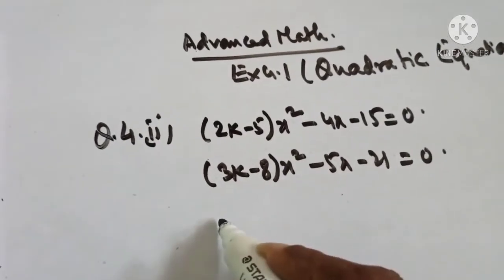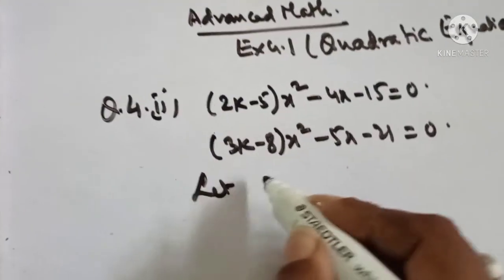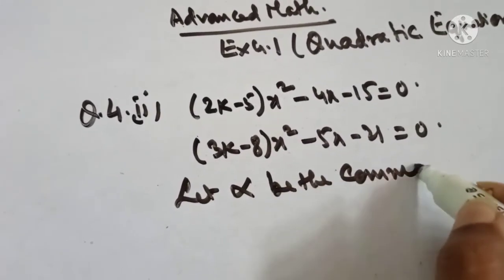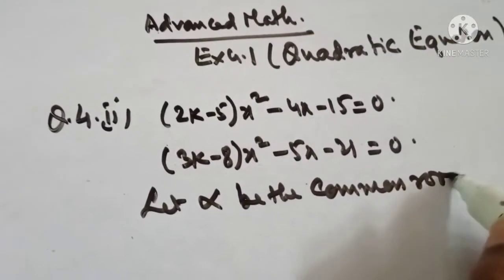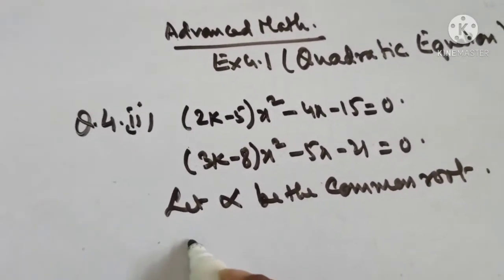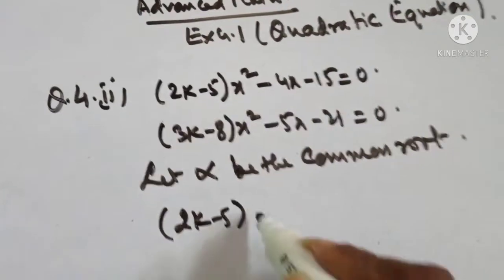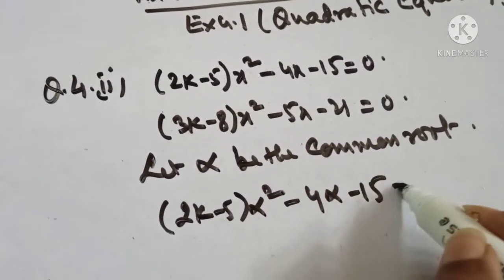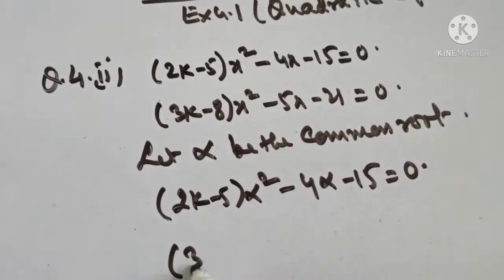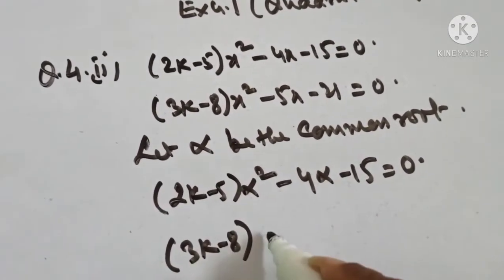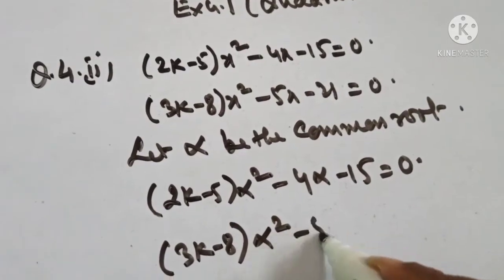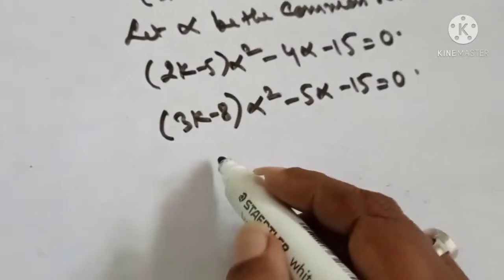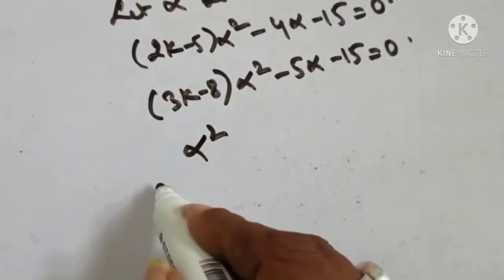So let alpha be the common root. The equations become: (2k minus 5)alpha squared minus 4 alpha minus 15 equals 0, and (3k minus 8)alpha squared minus 5 alpha minus 21 equals 0. I am going to take the help of the cross multiplication method.